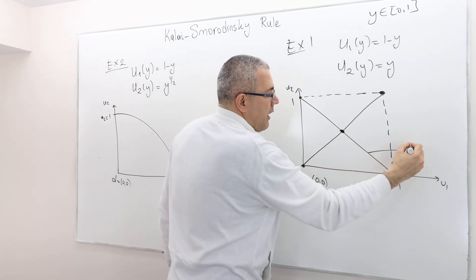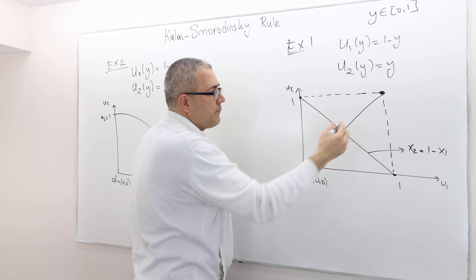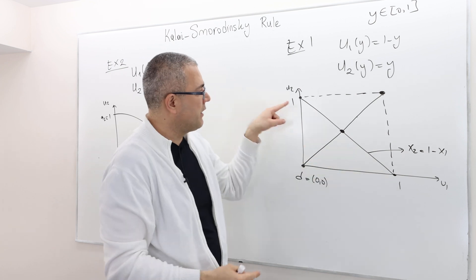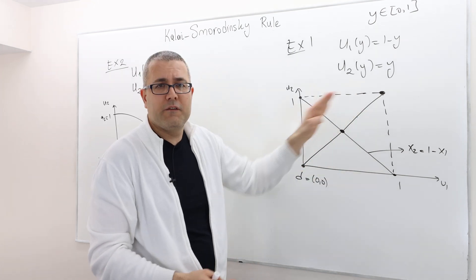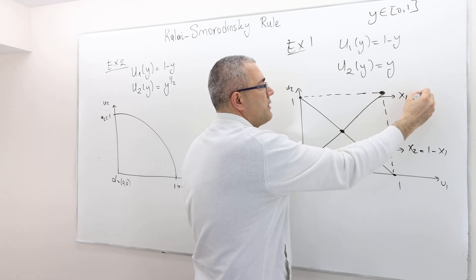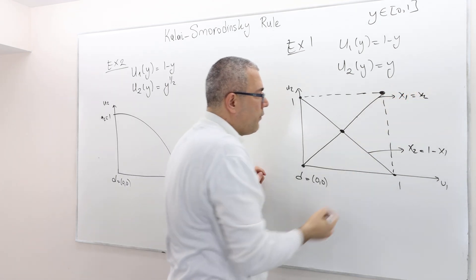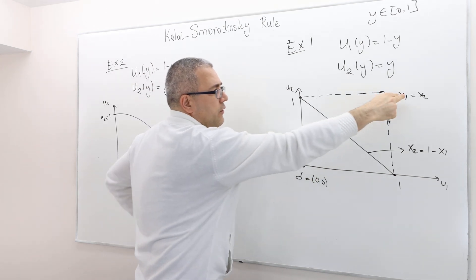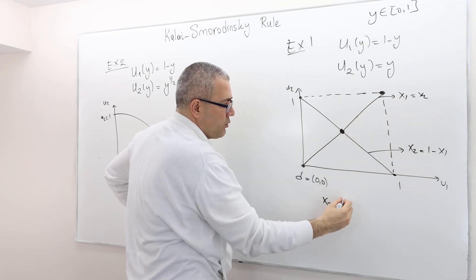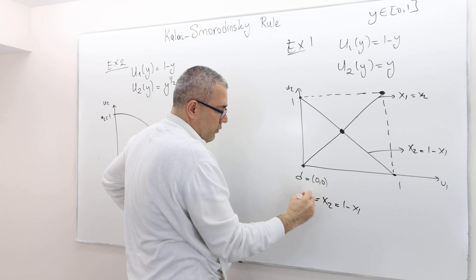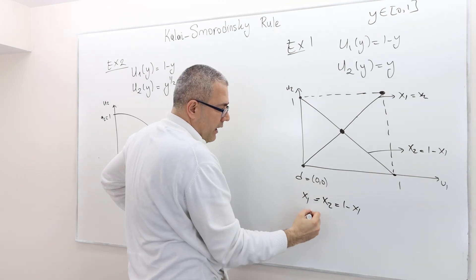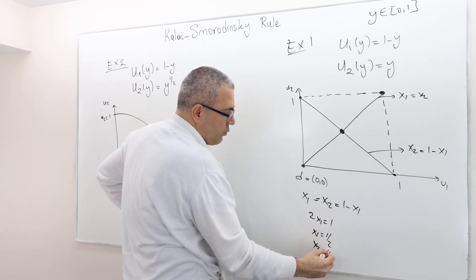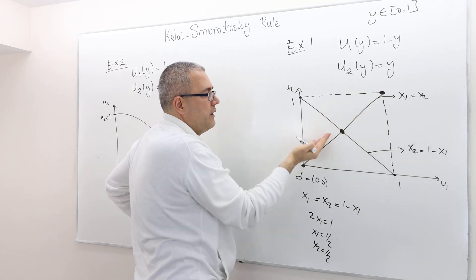So this is going to be the Kalai-Smorodinsky outcome. What is this outcome? Remember, this is x2 equals 1 minus x1 line. This is basically, this is 1, this is 1. So this has to be a 45 degree line. This is x1 equals x2 line. So therefore, if you want to find this point, it's basically the intersection of these two lines. So x2, which is 1 minus x1, but x2 is also equal to x1. So therefore, 2x1 equals 1, x1 equals 1 half. And hence, x2 is also equal to 1 half, because x1 is equal to x2 in this line.